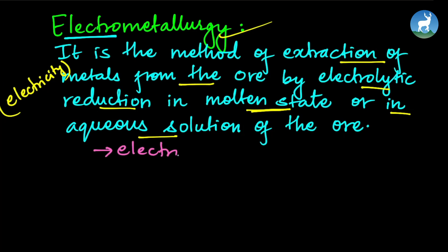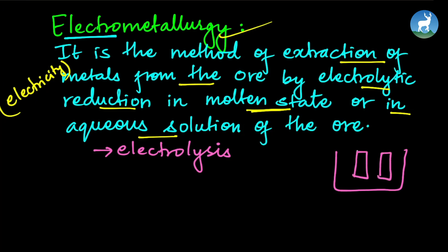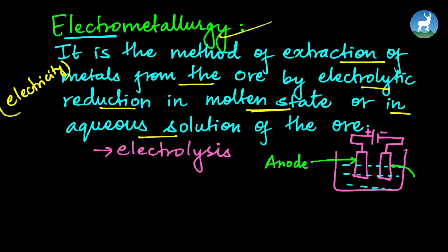We use electrolysis carried out in an electrolytic cell. We extract at the cathode and anode. The electrodes are connected to an external source — the positive terminal is the anode and the negative terminal is the cathode — with a suitable electrolyte solution.